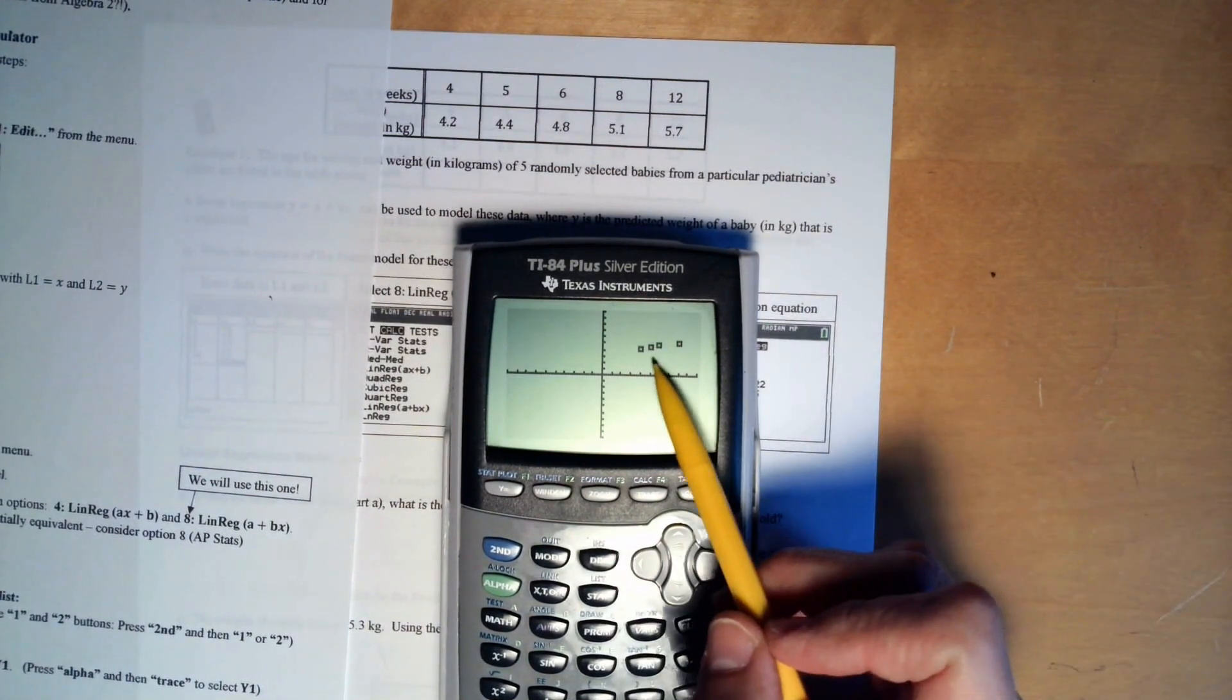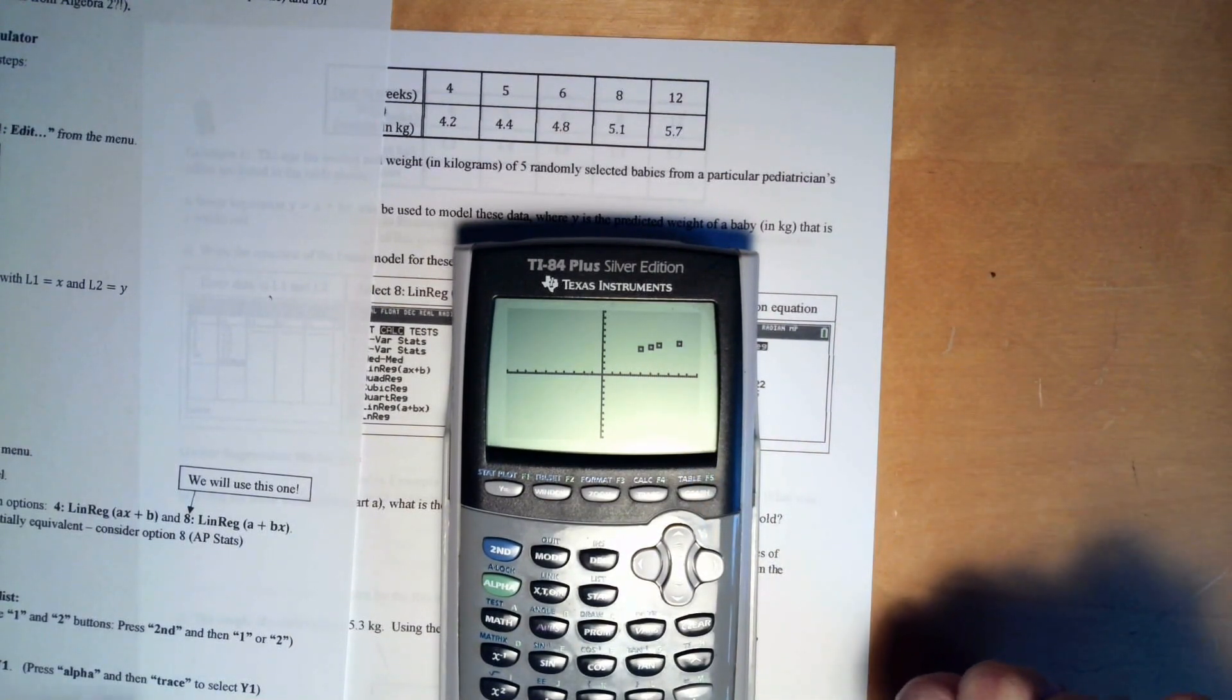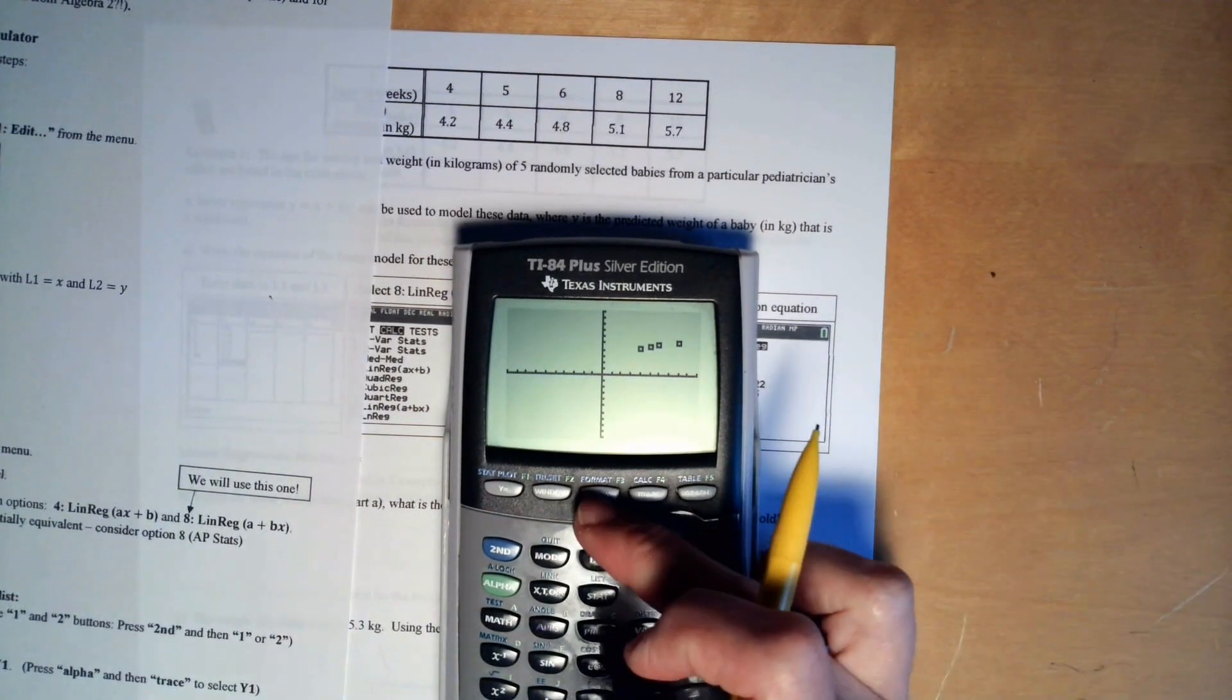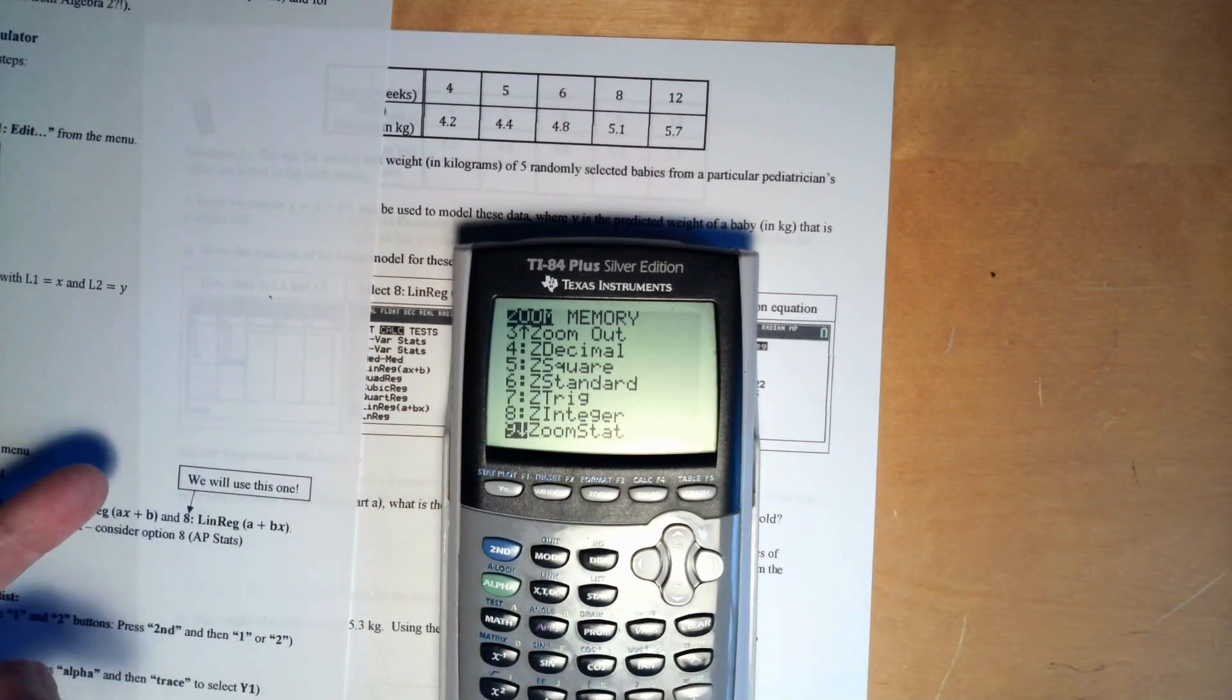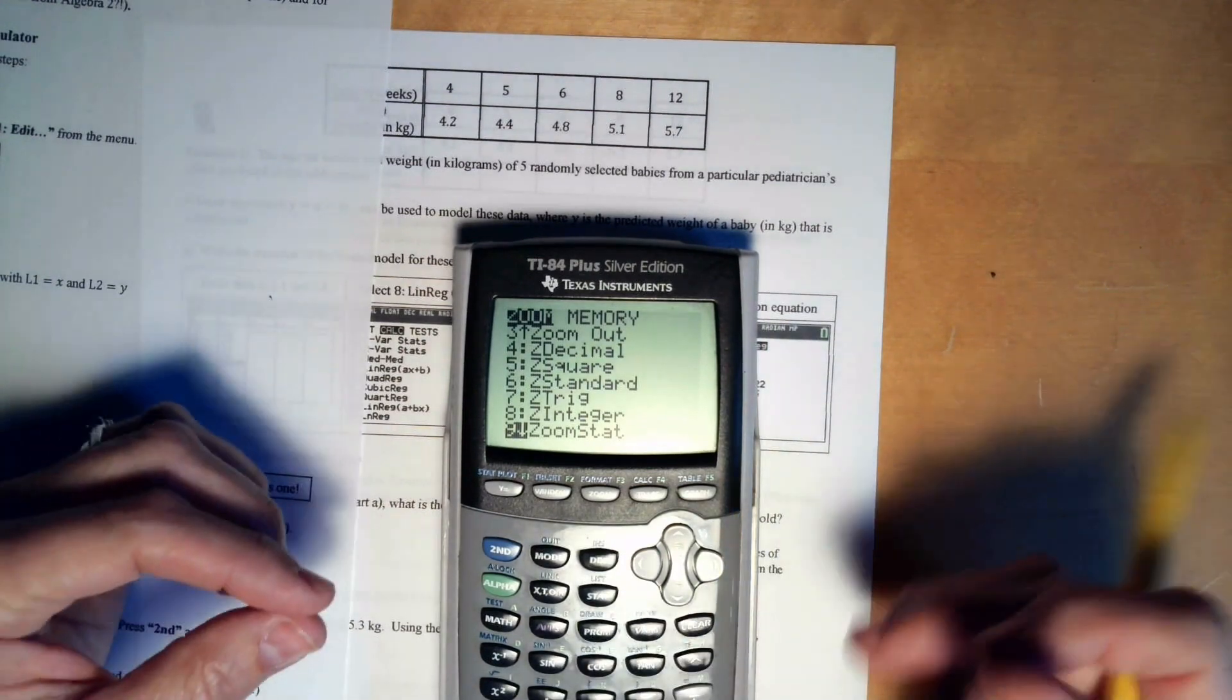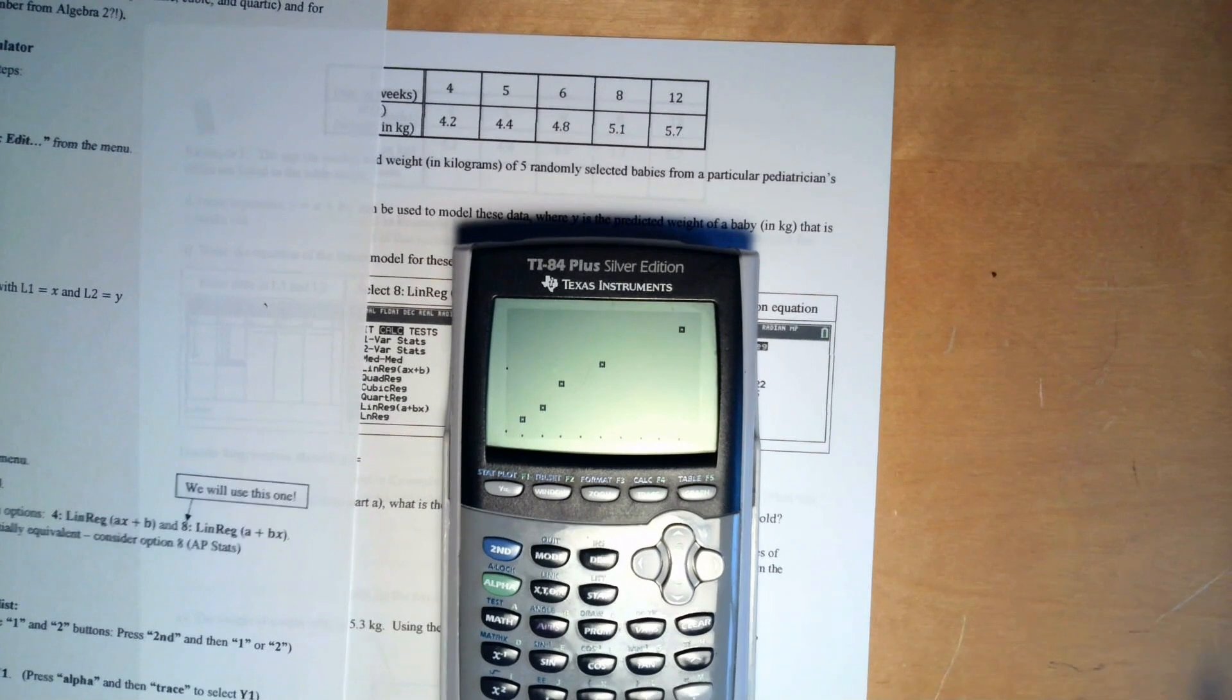If I press graph right now, you see all my stuff is over there. And so the calculator has a nice feature that kind of zooms in on like what you want to look at. So what we're going to do is we're going to press zoom and you basically go down to number nine. We're just going to press nine in the future, but that's zoom stat. So the calculator knows what's in the list and it's going to give you a window that's like best for that data. Press nine and there it is.